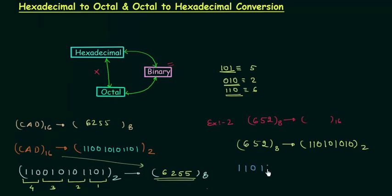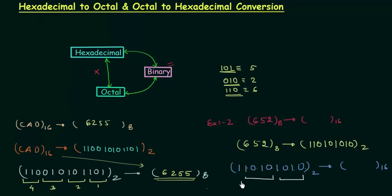Now we convert the binary number 110101010 to hexadecimal. Starting from the right, we make groups of 4 bits. The first group is 1010, the second group is 1010, and the third group is 0001. 1010 is 10, which is written as A; 1010 is again A; and 0001 is 1. So the hexadecimal equivalent of octal 652 is 1AA.